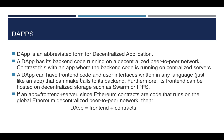A dApp can have front-end code and user interfaces written in any language, and these can make calls to the back-end running in the peer-to-peer network. Furthermore, its front-end can be hosted on decentralized storage such as Swarm or IPFS. So if a traditional app equals front-end plus a back-end server, a dApp is front-end plus smart contracts running on the global peer-to-peer network — for example, on Ethereum.